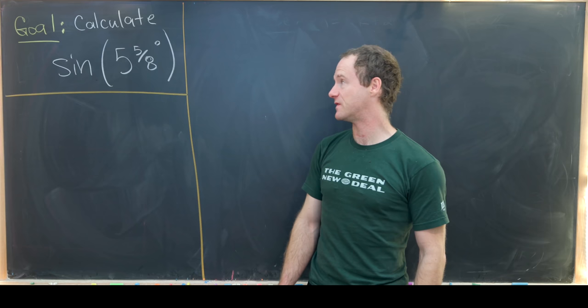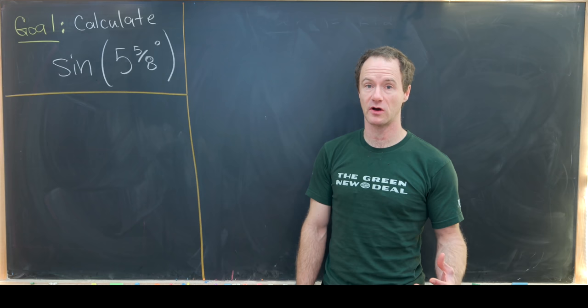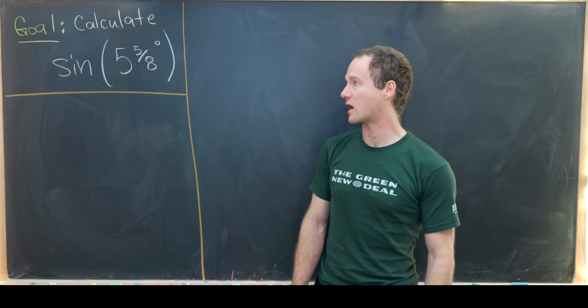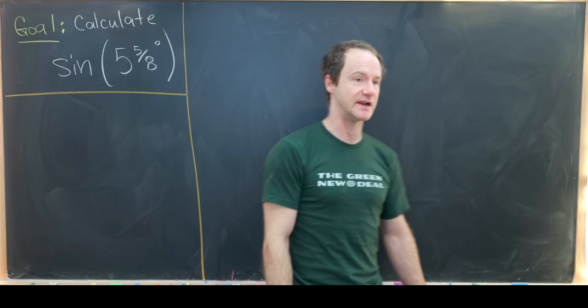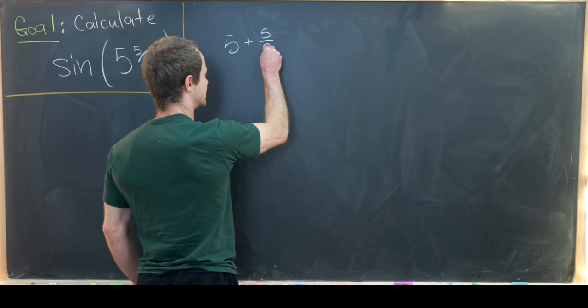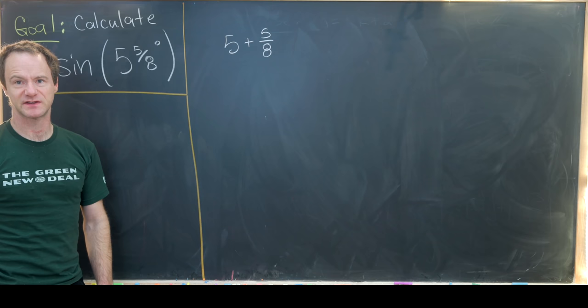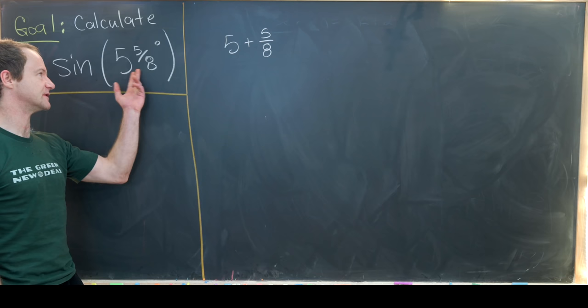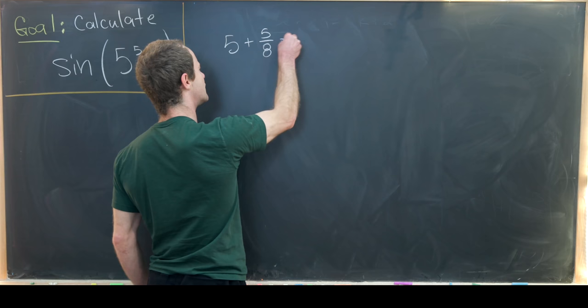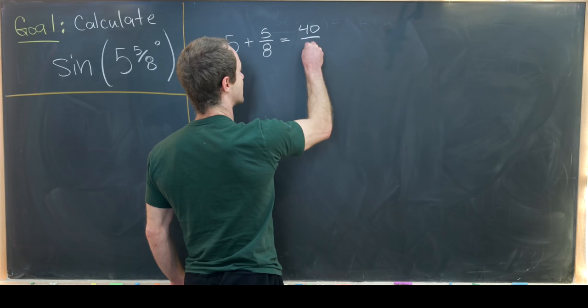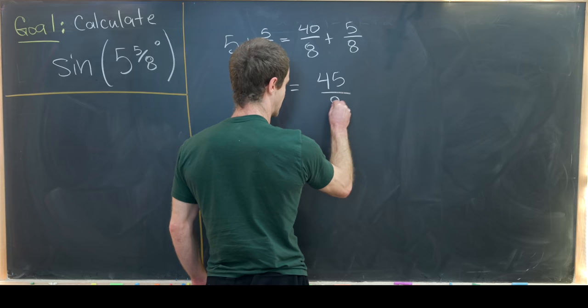Most nice values of trig functions occur at certain rational values of pi radians, so that points to our first step: converting 5 and 5 eighths degrees into radians. Notice that 5 and 5 eighths is really just 5 plus 5 eighths — it looks like multiplication but means addition. Since 5 equals 40 over 8, we have 40 over 8 plus 5 over 8, which gives us 45 over 8.